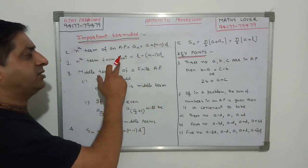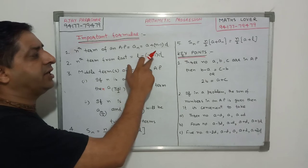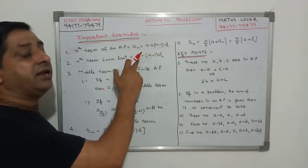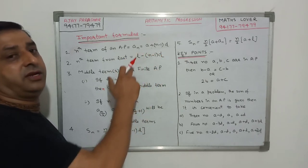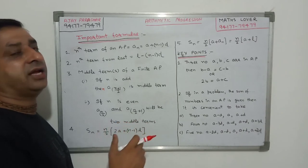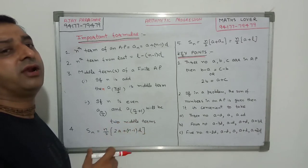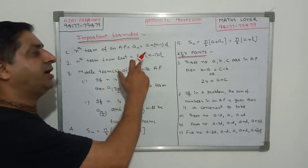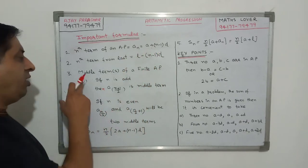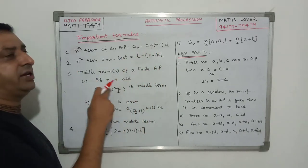Now Nth term from last. The formula is L minus N minus 1 into D. Where L represents the last term. For example in a question, if the question is like that, find the 20th term from the last of an AP, then we will apply this formula.